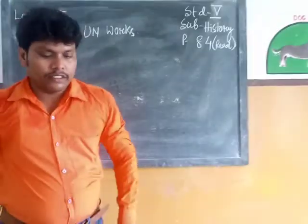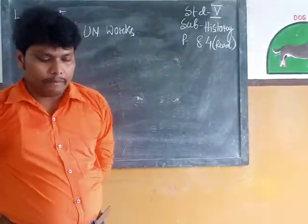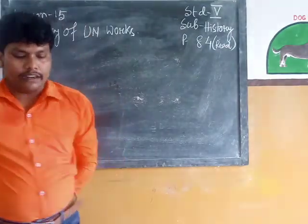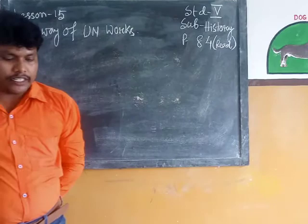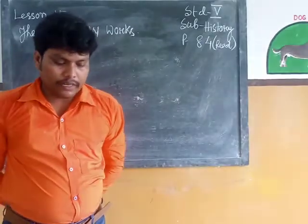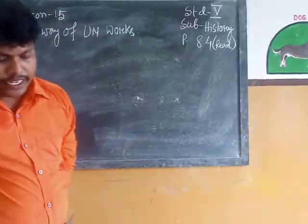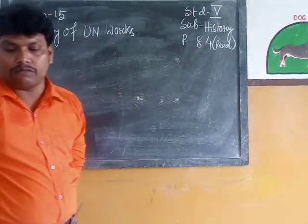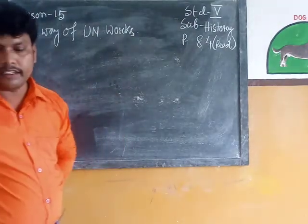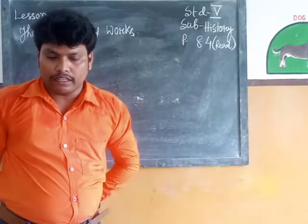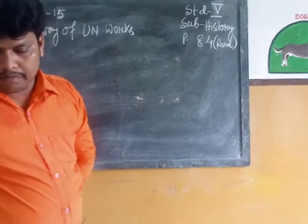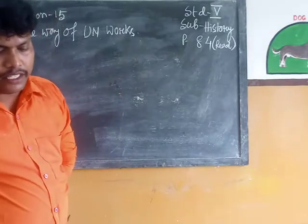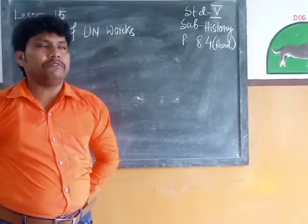There are six main organs of the United Nations. Number one, the General Assembly. Number two, the Security Council. Number three, the Secretariat. Number four, the Economic and Social Council. Number five, the International Court of Justice. Number six, the Trusteeship Council. These are the six main organs of the United Nations.